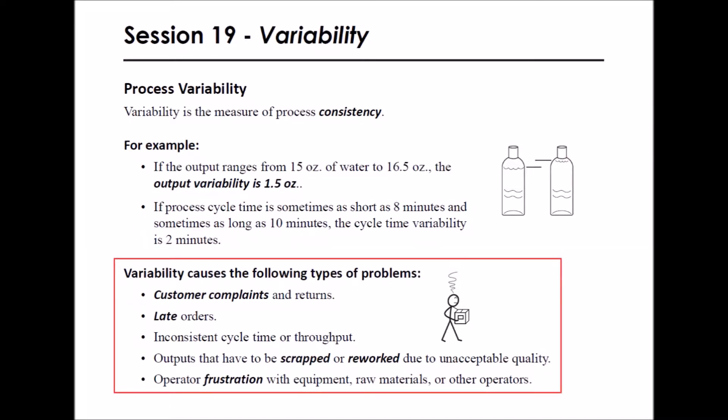Variability causes the following types of problems: customer complaints and returns, late orders, inconsistent cycle time or throughput, outputs that have to be scrapped or reworked due to unacceptable quality, and operator frustration with equipment, raw materials, or other operators.